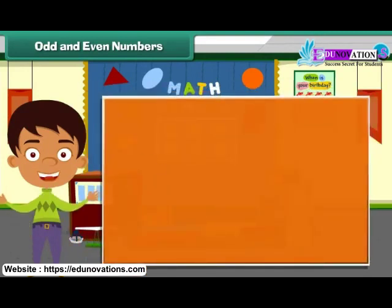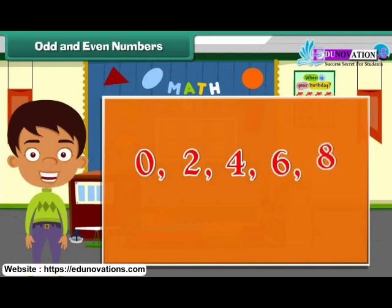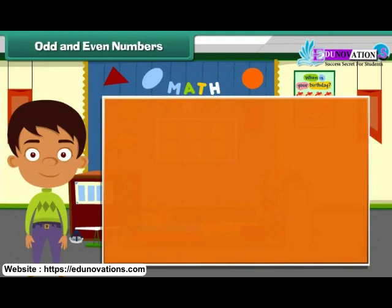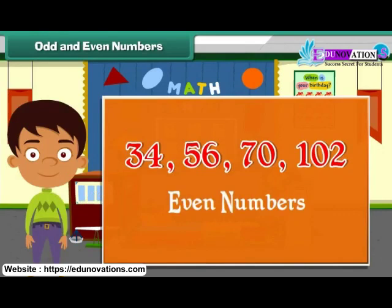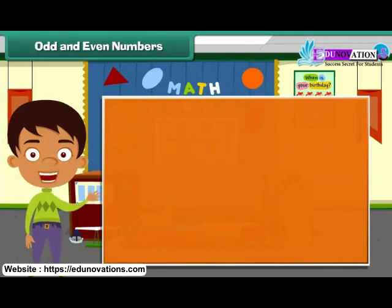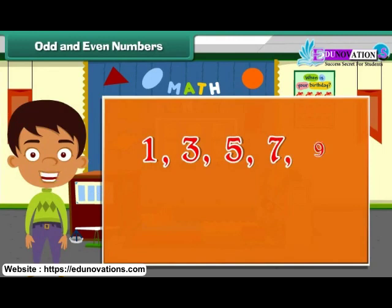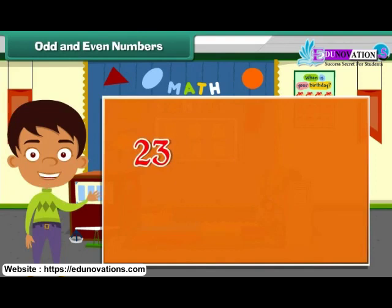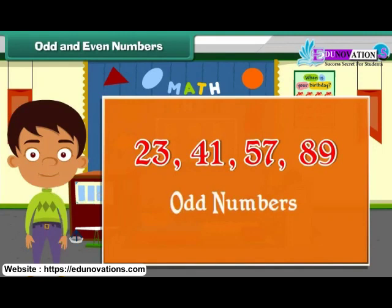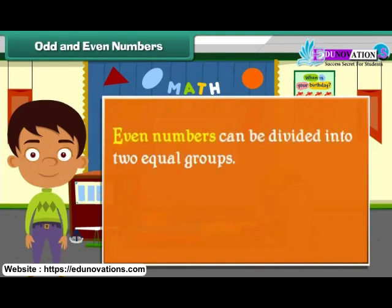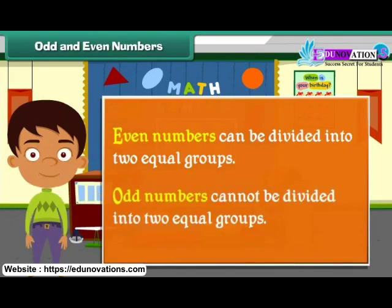Odd and even numbers. Any number that has a 0, 2, 4, 6, or 8 in the ones place is called an even number. For example, 34, 56, 70, and 102 are all even numbers. Any number that has 1, 3, 5, 7, or 9 in the ones place is called an odd number. For example, 23, 41, 57, and 89 are all odd numbers. Even numbers can be divided into two equal groups. Odd numbers cannot be divided into two equal groups.